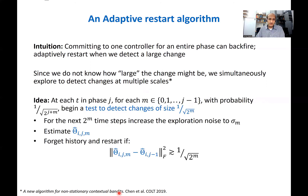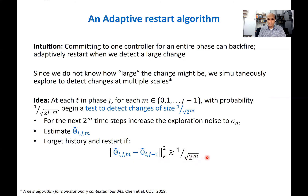At each time t in phase j, and for each possible m from 0 to j-1, we try to detect whether a change of size 1/sqrt(2^m) has happened. We do that by, with some probability, starting a detection test: for the next 2^m time steps, we increase the exploration noise to sigma_m = 1/sqrt(2^m). Based on observations over these 2^m time steps, we estimate the prevailing dynamics, calling it theta hat_{ij,m}. If our estimate differs from the estimate from the previous phase by more than 1/sqrt(2^m), we forget everything and restart — that's the adaptive restart algorithm. There are more details in the paper, but this is the key idea.